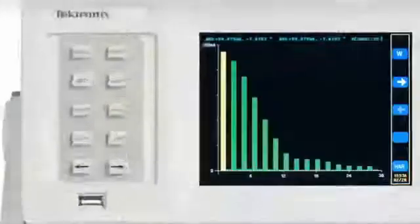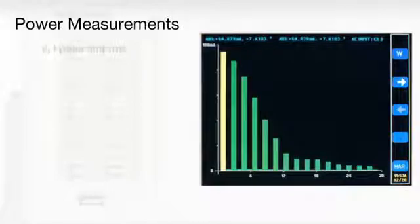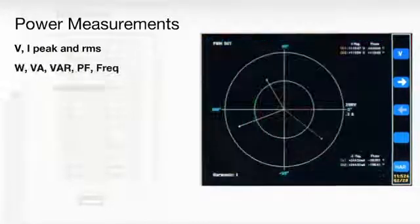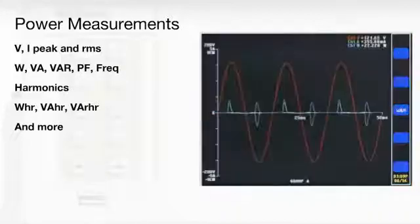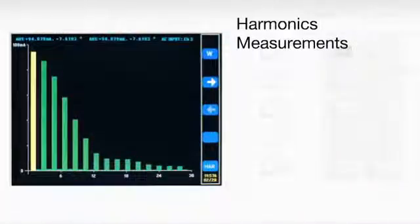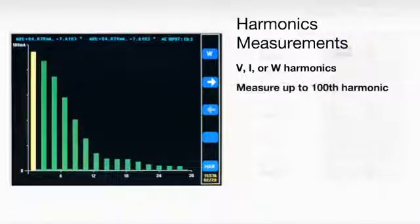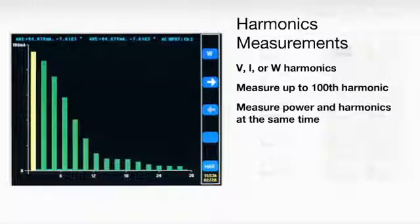The PA-4000 provides all key power measurements, including harmonics analysis and energy consumption. It displays the measurements in formats you'll find instantly familiar and informative. Every PA-4000 instrument comes with the ability to measure up to the 100th harmonic, so you can find out where you stand relative to regulatory limits on harmonic distortion.